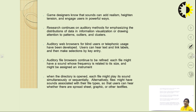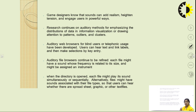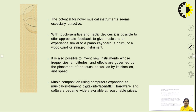Users can hear text and link labels and then make selections using key entry. Auditory file browsers also need to be refined. Each file might have a sound whose frequency is related to its size and might be assigned an instrument. When a directory is opened, each file might play its sound simultaneously or sequentially, or files might have sounds associated with their file types, so users can hear whether they are spreadsheets, graphics, or other text files and easily identify which file is open.